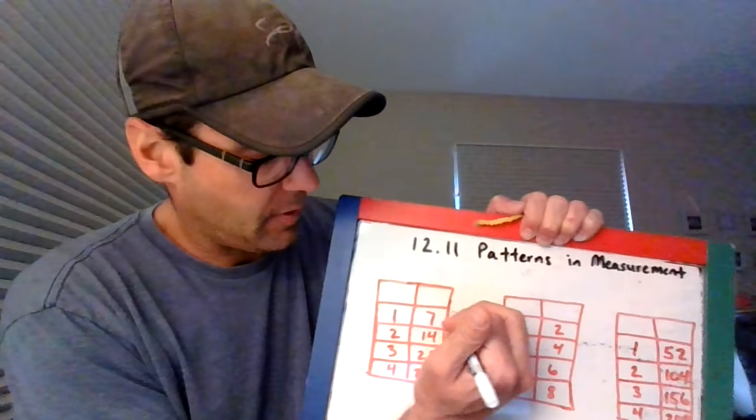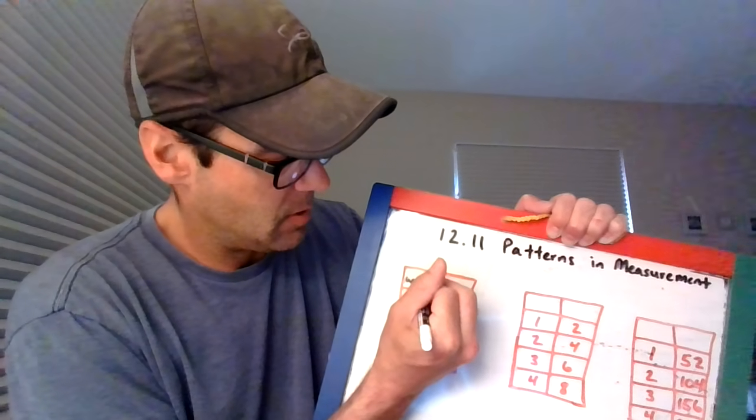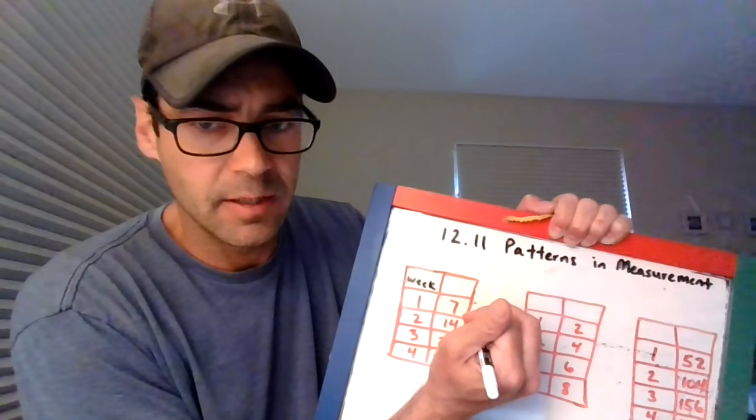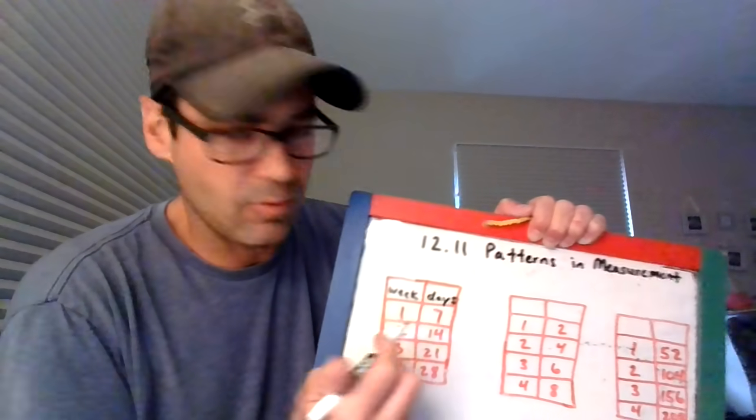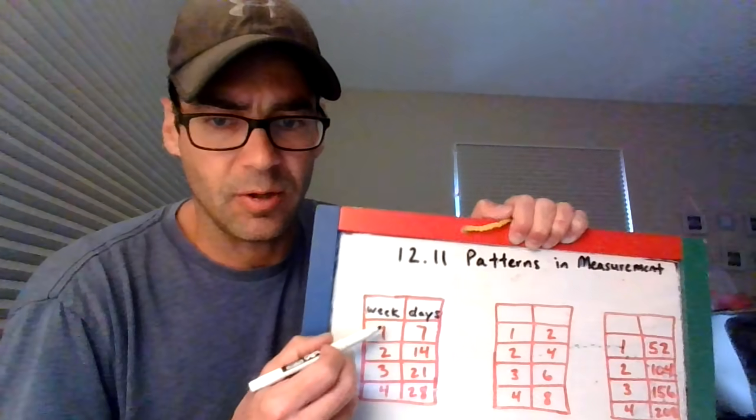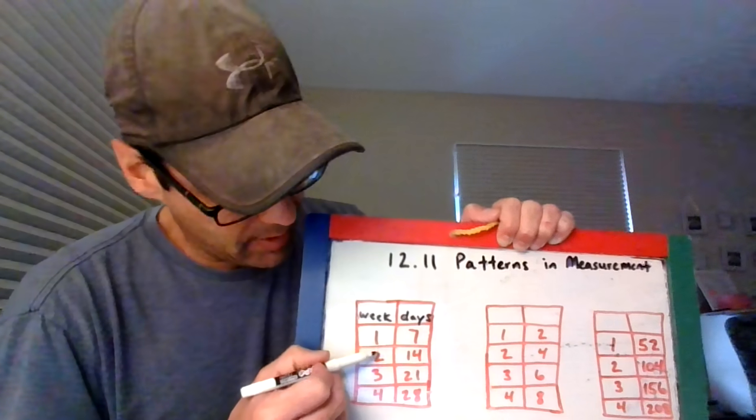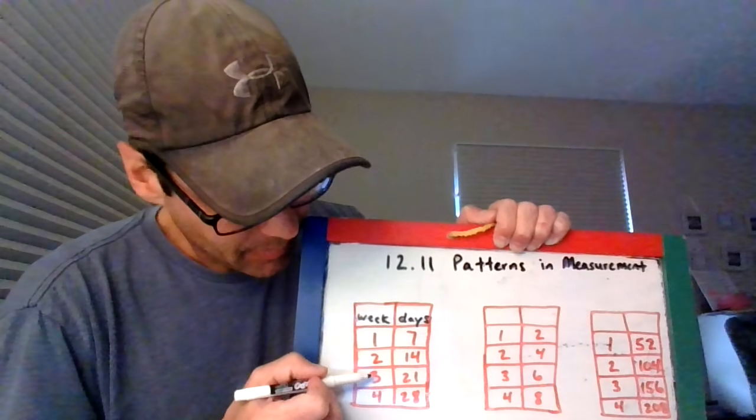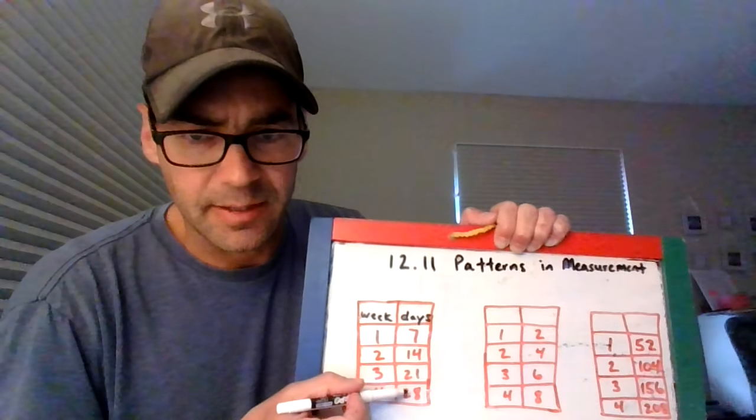Hopefully you've figured out that this is for every one week, there are seven days. So that would be your heading: weeks and days. If you look down the line, one week is seven days, two weeks is 14 days, three weeks is 21 days, and four weeks is 28 days. You're looking at the patterns, skip counting by ones and skip counting by sevens.